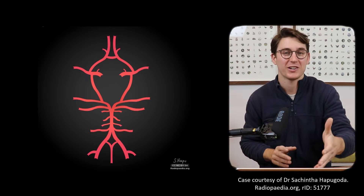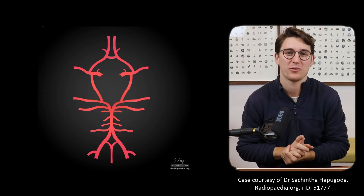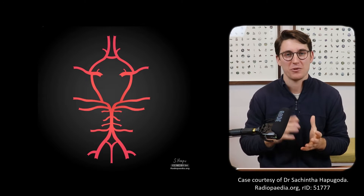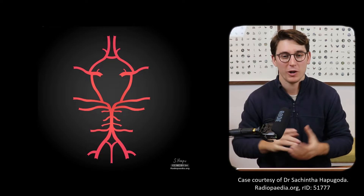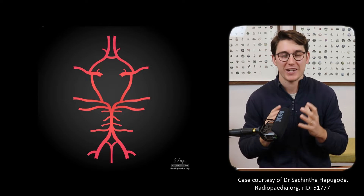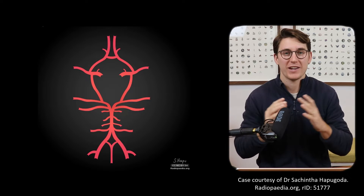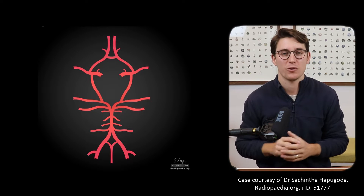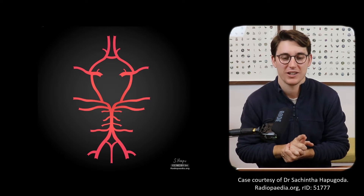We're going to start by looking at this 2D diagram that I'm sure you've all seen before, and then we're going to have a look at a time-of-flight MR angiogram where we can look at these vessels in 3D space. We'll see where the vessels course through the brain, which branches they give off, and how they connect to form this circle of Willis.